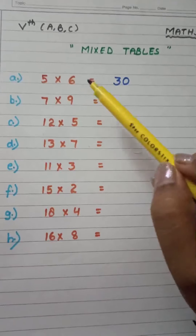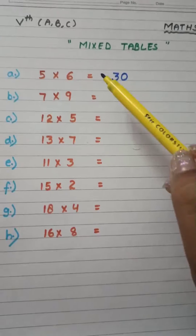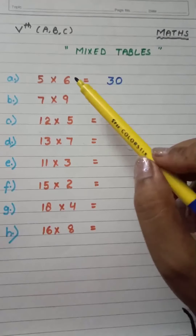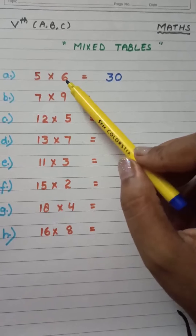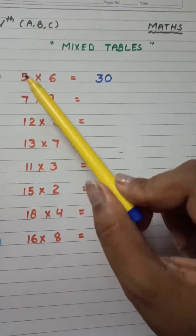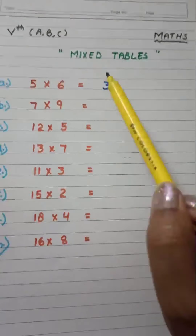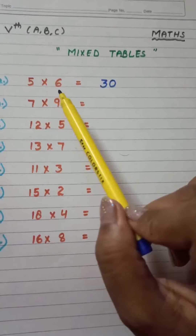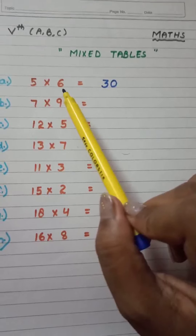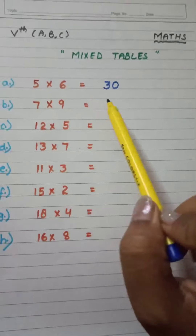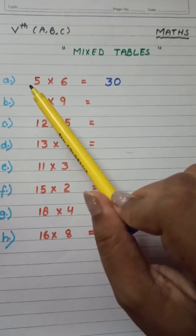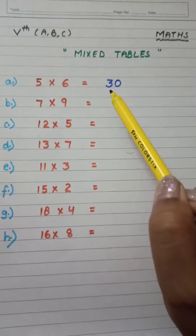Part A is five sixes. Here we have to read out the table of five, or you can also read the table of six, because five sixes are thirty. If we read the table of six, we will get the same answer — six fives are also thirty.